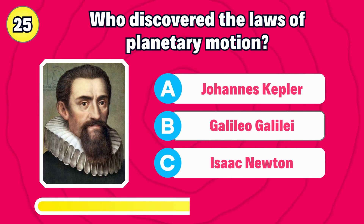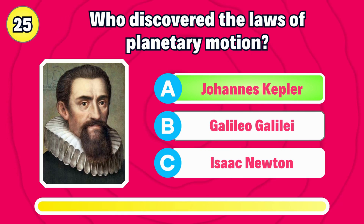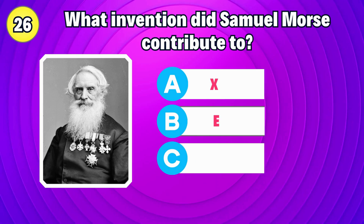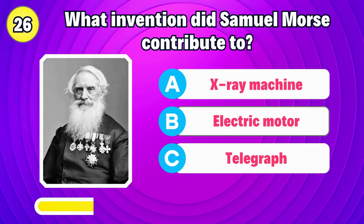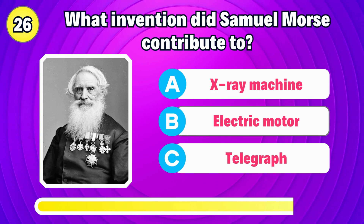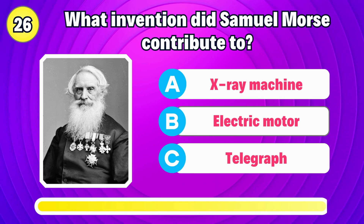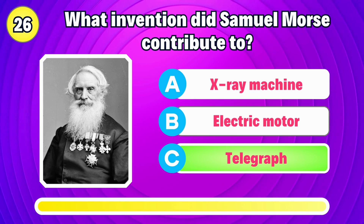Who discovered the laws of planetary motion? Correct, it's Johannes Kepler. What invention did Samuel Morse contribute to? Right, it's the telegraph.